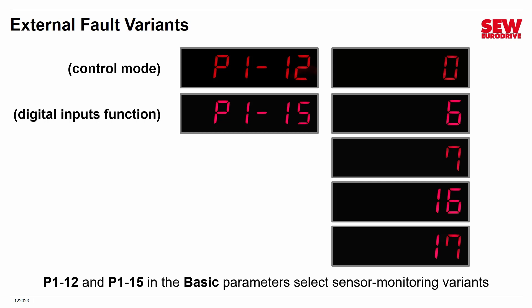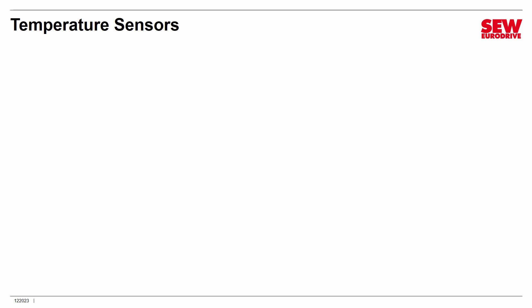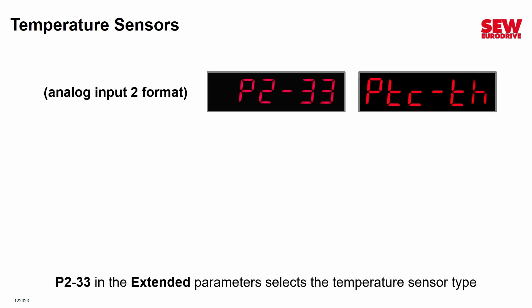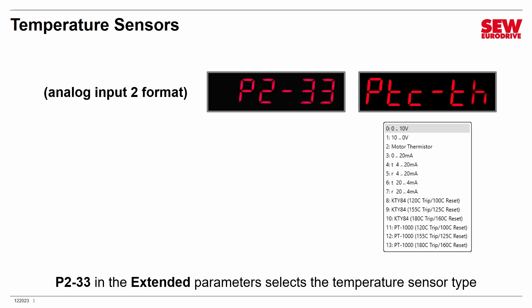If you're going to monitor a temperature sensor, you need to do one additional thing: go to parameter 2-33 in the extended parameters and specify the temperature sensor type. This parameter is really configuring analog input 2 to the correct voltage format. If you're using a TH or TF sensor, select option 2. If you're using a KTY84 or PT1000 sensor, pick from the appropriate options — notice they have different trip and reset values, so find the one that matches your particular motor temperature sensor.